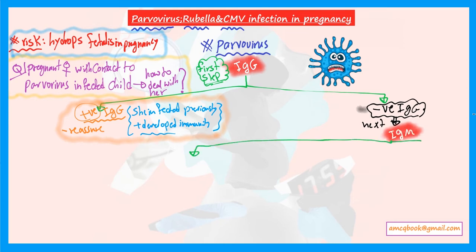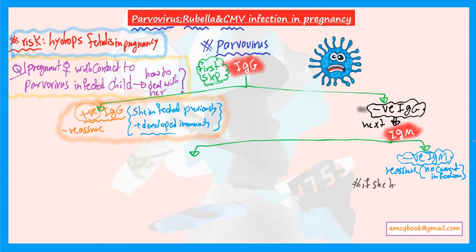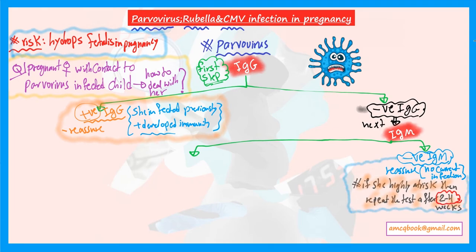If IgM is negative, just reassure — that means no current infection, the woman is not infected yet, so just reassure and follow up. But if the woman is highly at risk of infection, repeat the test after two to four weeks, because antibodies may not appear until then. If IgM is positive, unfortunately that means the woman is currently infected.